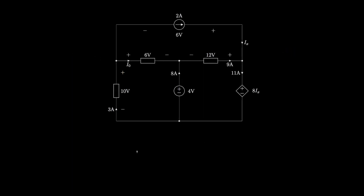Now let's look at an example of a circuit that contains a current-controlled voltage source, and use the conservation of power principle to solve for the unknown current I0. To use conservation of power, the first thing we'll do is write down an expression for the total power in the circuit. We have six elements in the circuit, and I'll put a check by each one as I write down its contribution to the power.